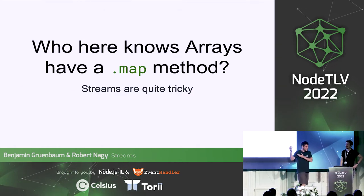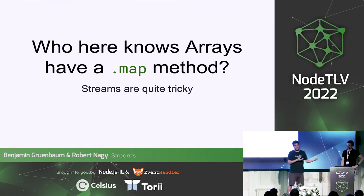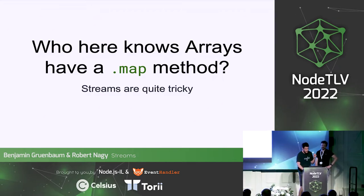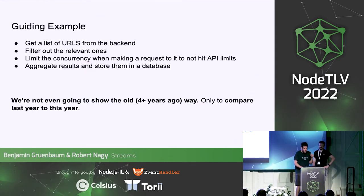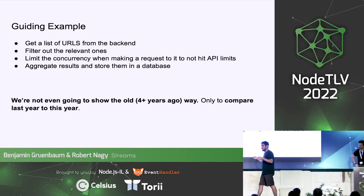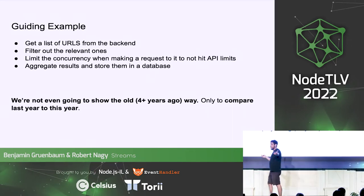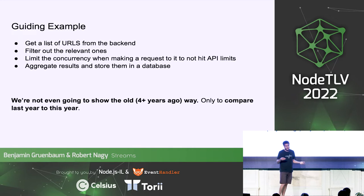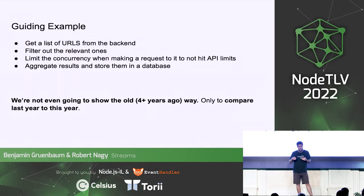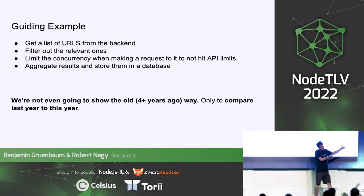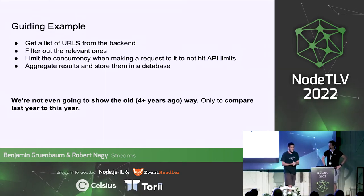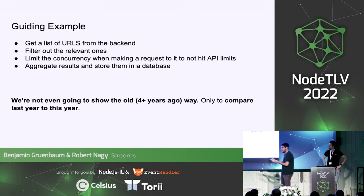Today we want to go over how we got to the messy point we're at and what we're doing to fix it, because it's quite an interesting story. It started at this conference last year. We'll use a simple example: getting a list of URLs, making API requests, limiting concurrency, updating results, and storing them in a database — something that should be simple in Node.js.